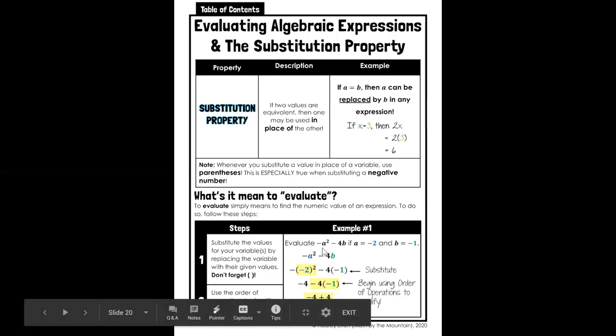For instance, in this example, negative a squared minus 4b, if a is equal to negative two and b is equal to negative one, then we would rewrite this as negative (because this negative is the original negative in the problem) in parentheses, we're going to substitute in negative two.